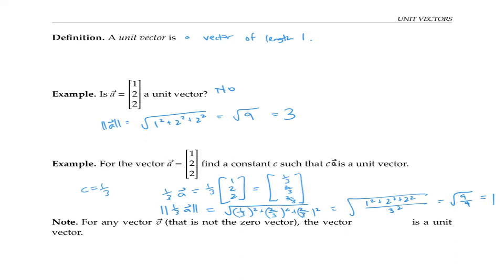And more generally, for any vector v that is not the zero vector, we can rescale it to be a unit vector by simply multiplying by one over its length.